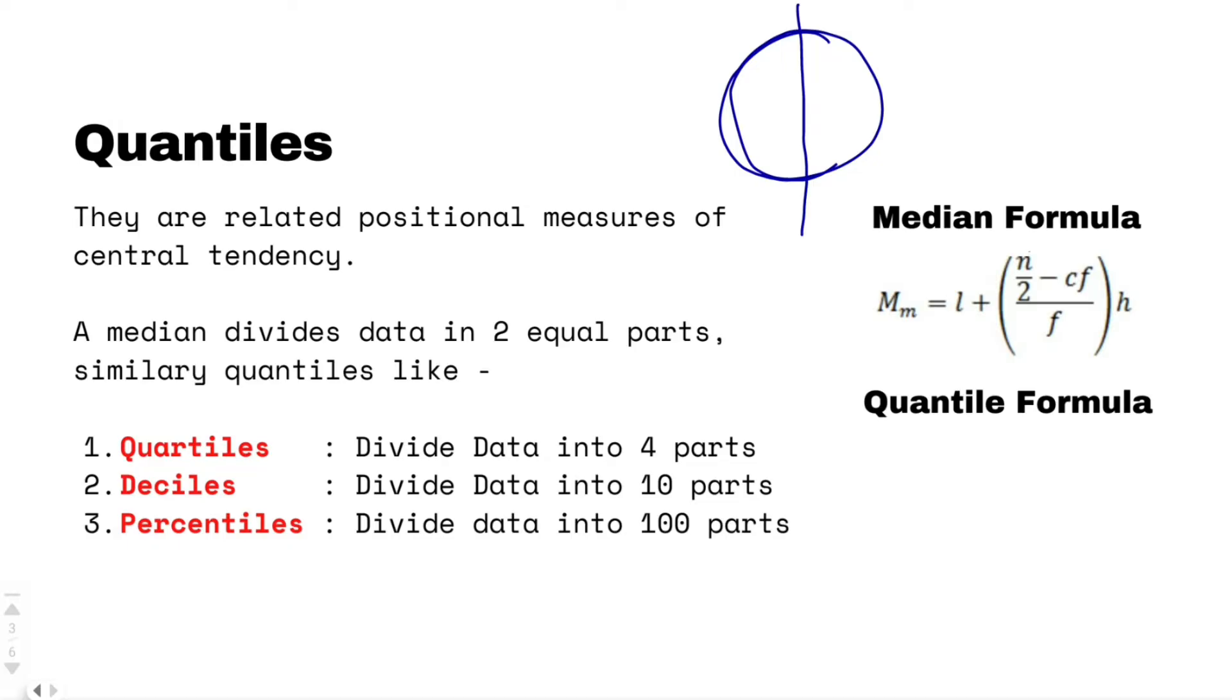Now, when you talk about a quantile, they are also related positional measures of central tendencies. Quantiles could be quartiles, deciles or percentiles. A quantile is any positional measure that divides your data in terms of its quantity. That is why it is called a quantile. Now quartile is one type of quantile. What does quart mean? Quart means 4, right? Quadruples, quadrants, 4. As the name suggests, a quartile will divide your data into 4 parts, 4 equal parts.